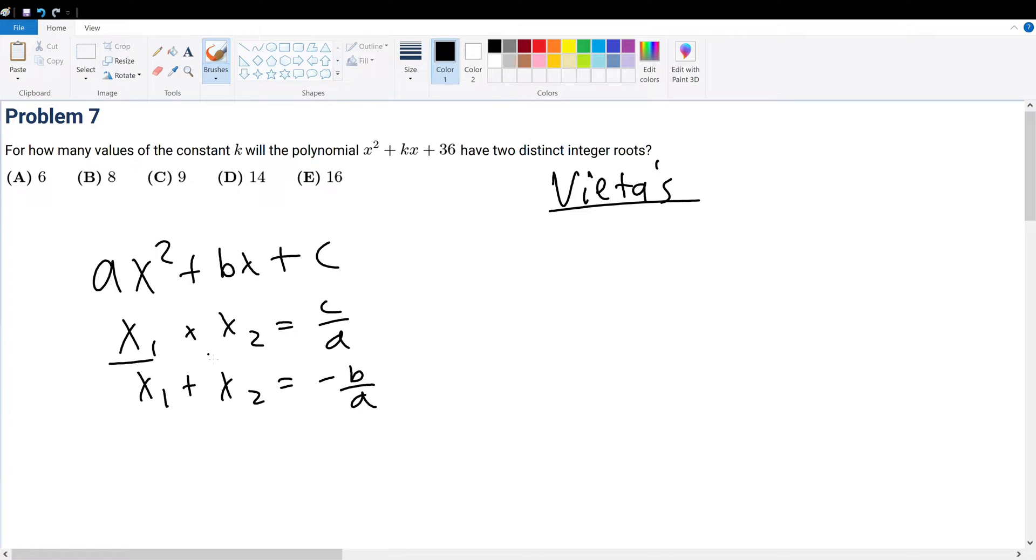And the summation of the roots will give you negative b over a. Now, you might be asking, wait, how did I know there are two roots? Well, the fundamental theorem of algebra basically says that for an nth power polynomial, there are n roots. So since we have a quadratic, we must have two roots, x1 and x2.